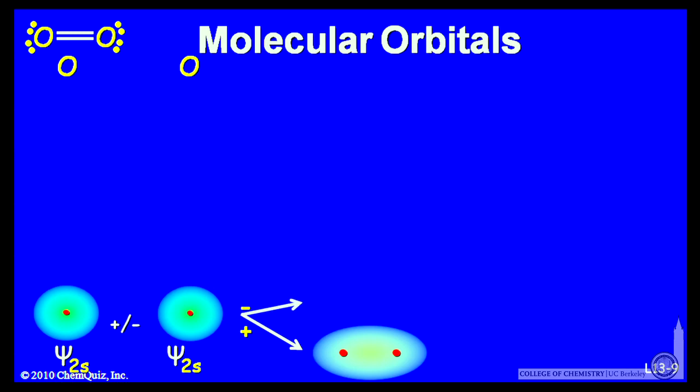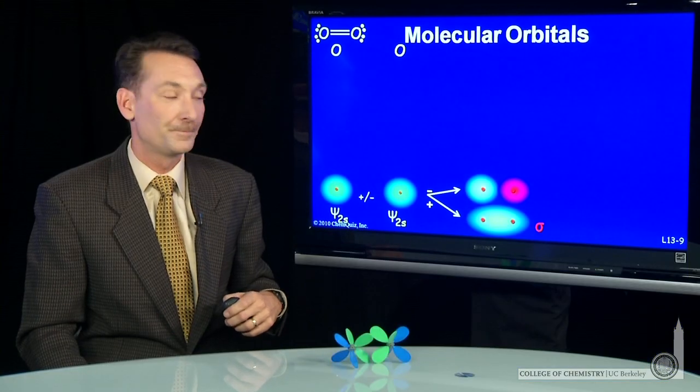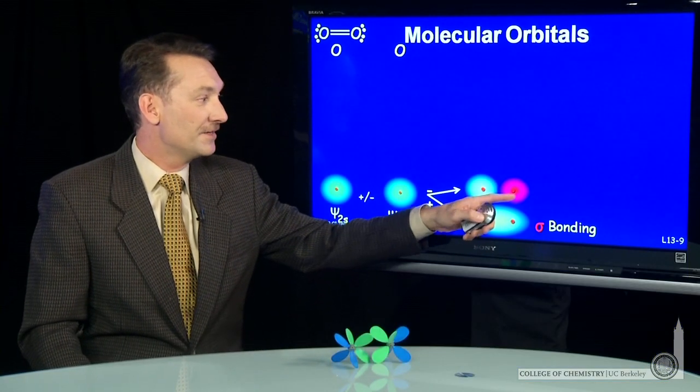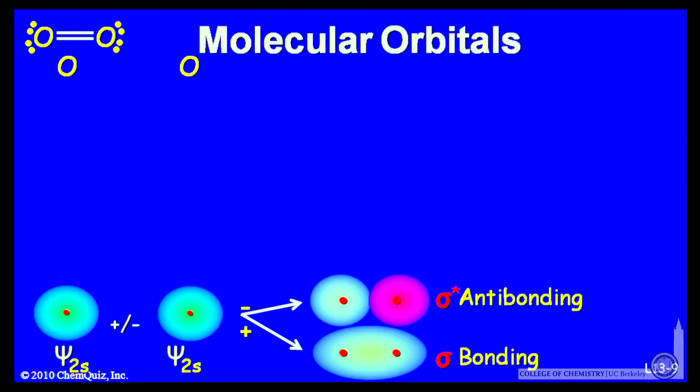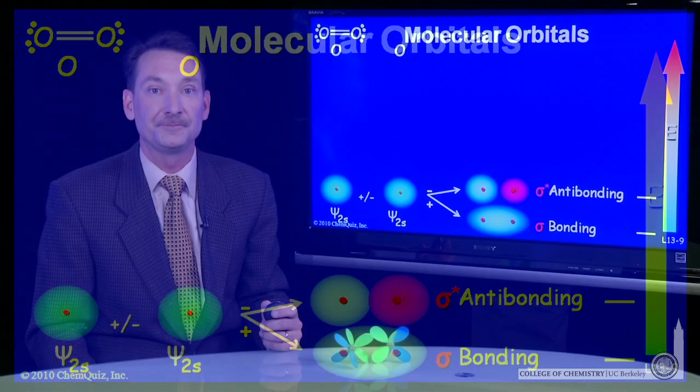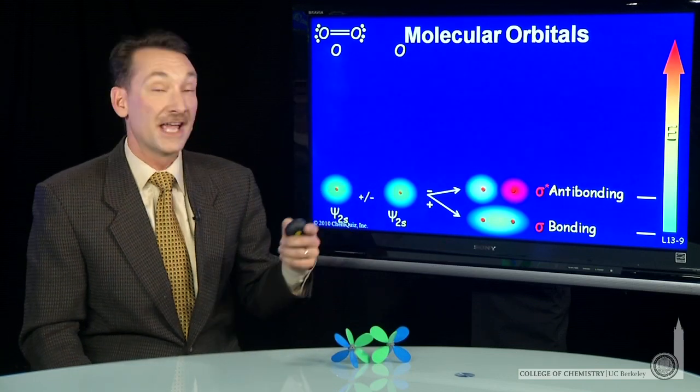If I take the minus combination, I get a node between the two nuclei. Higher energy, sigma anti-bonding. Sigma because the electrons lie along the internuclear axis. So sigma bonding, sigma anti-bonding. And I'll start to energetically plot them. So I have a bonding orbital and an anti-bonding orbital as energy increases going up the screen.